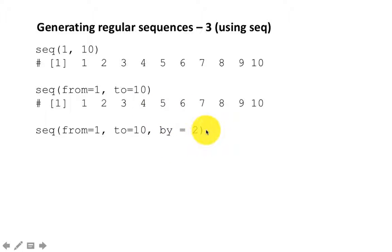Now comes the interesting part. You can say by=2. In other words, start from 1, go up to 10, but increment it by 2. So it's going to do 1, 3, 5, 7, 9, because we said go only up to 10. So the next number would be 11, which is beyond 10. So it doesn't show the next number. You can use from, to, by. That also works.